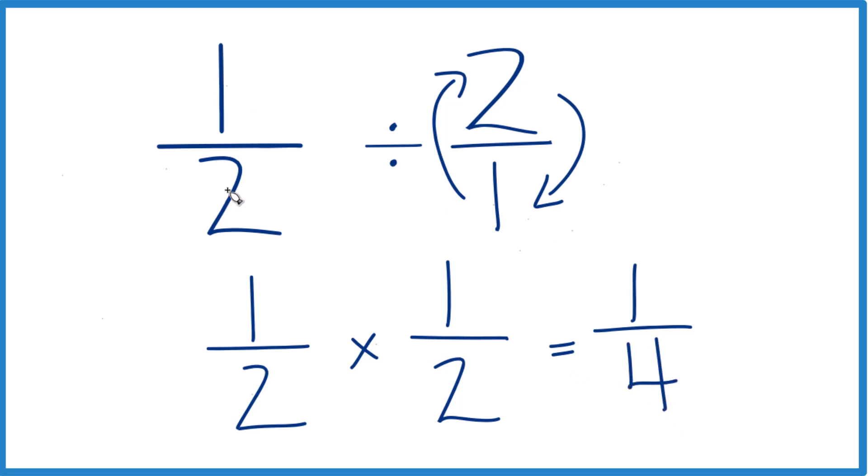We end up with one half divided by two or one half times one half. That gives us one fourth.